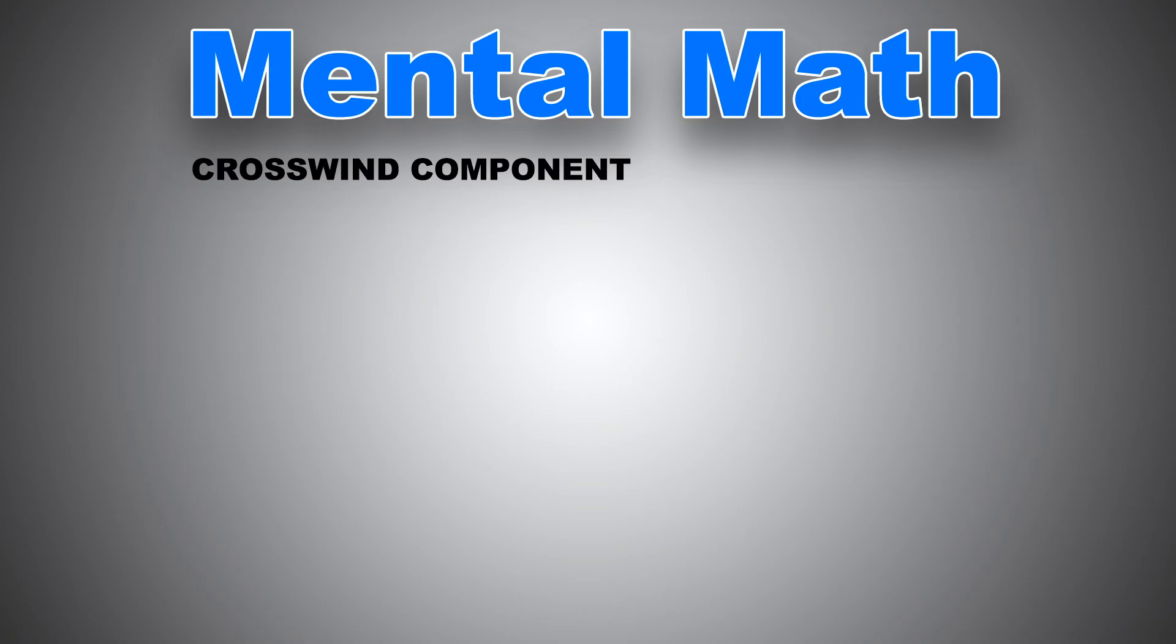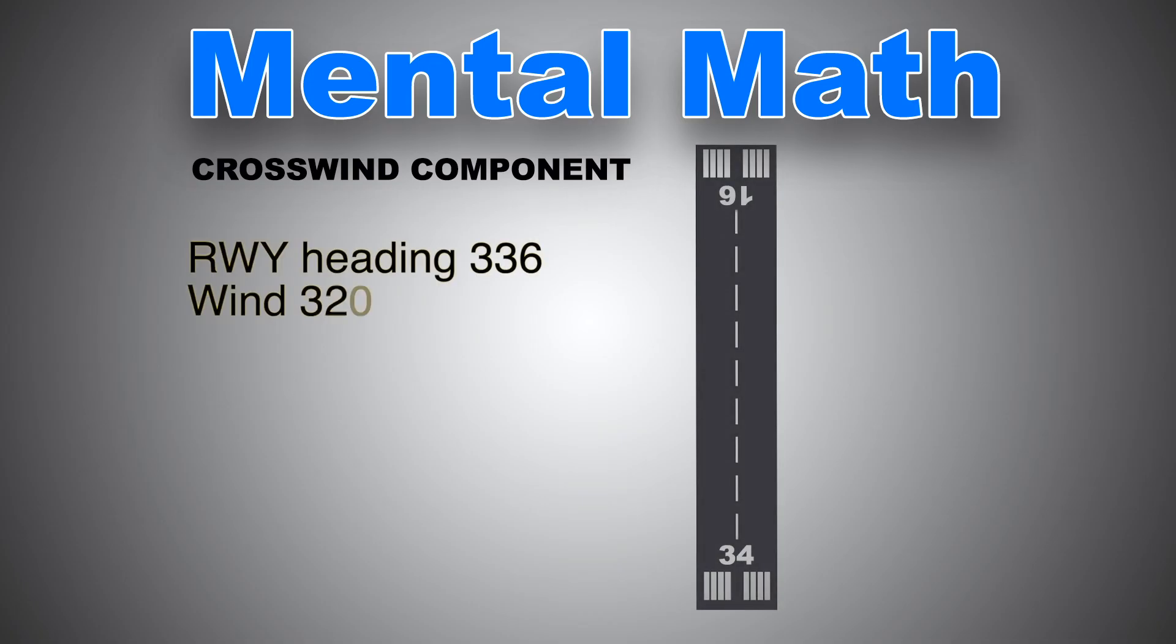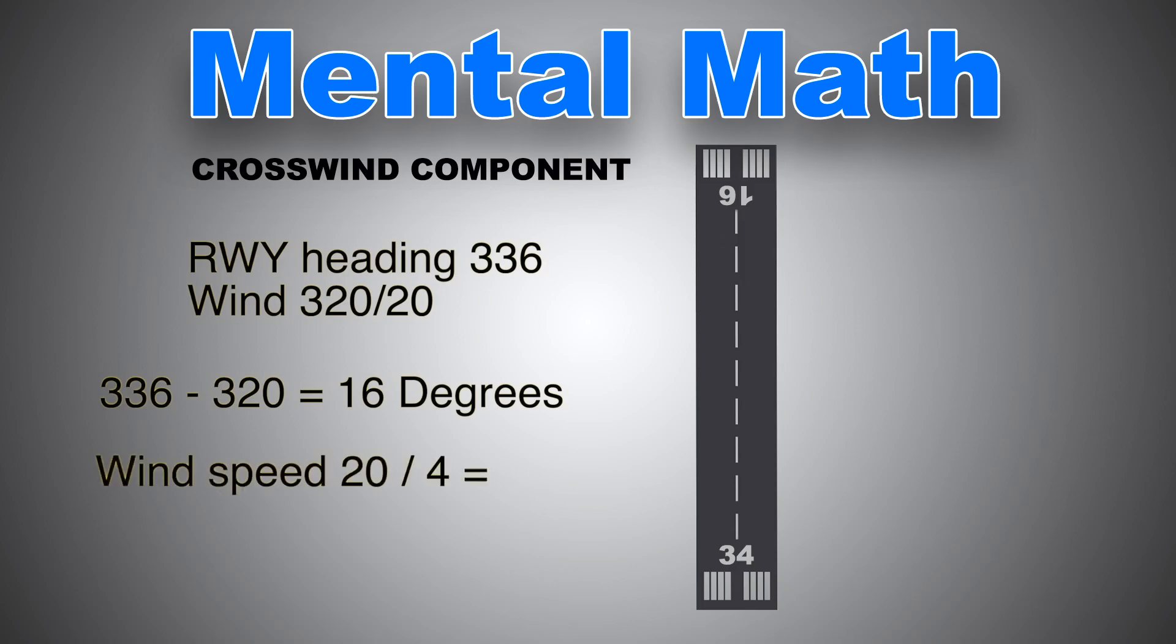Let's look at some examples. Let's say we have runway heading of 336 and wind 320 at 20 knots. The difference between the runway heading and the wind direction is 16 degrees. Alright, 15, 16 degrees off, so one quarter of the wind speed is crosswind, so 20 divided by 4 is 5 knots.